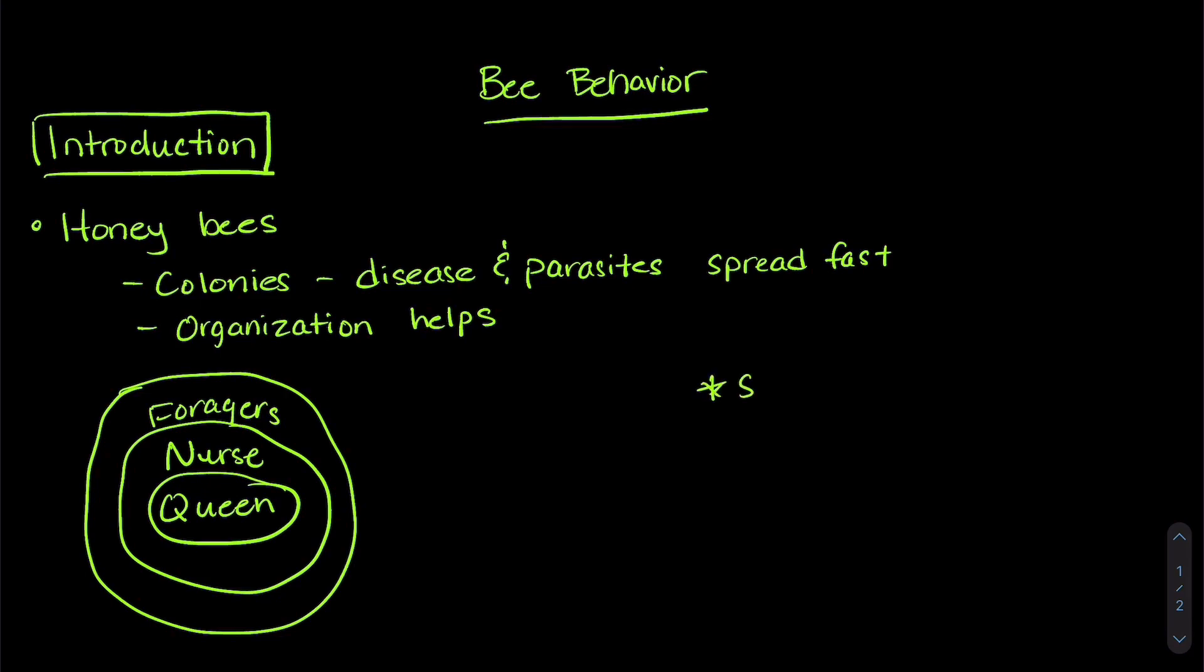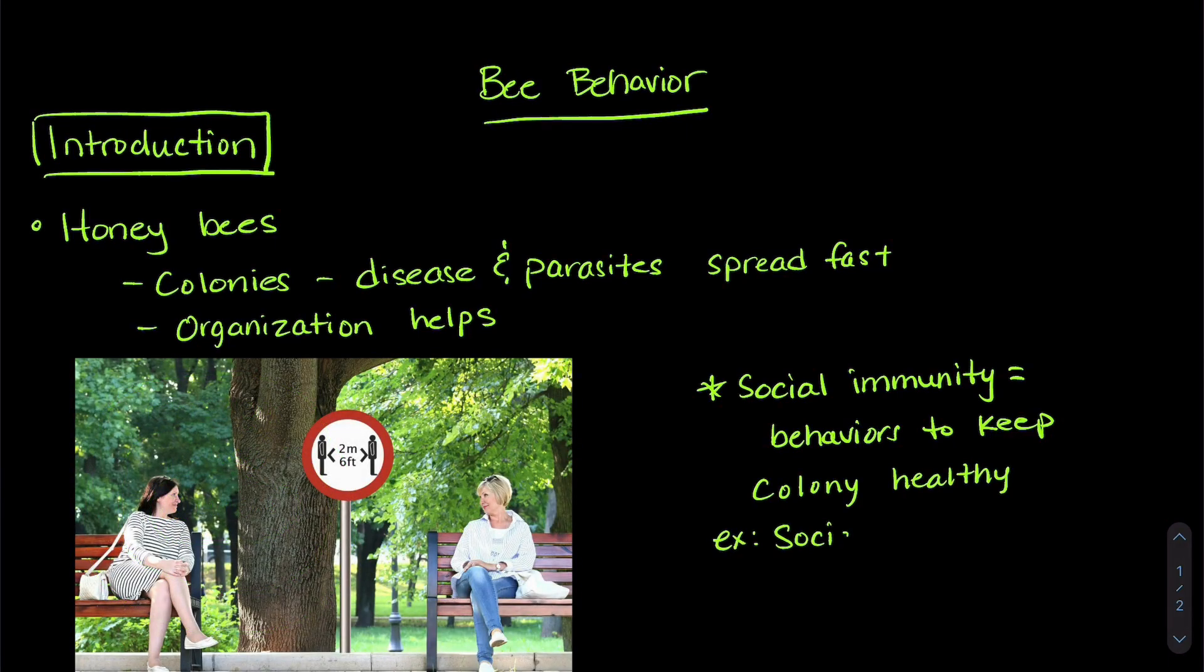Behaviors can also help. The colony can improve their defenses through something called social immunity. These are a collection of behaviors in social groups that can help decrease the susceptibility to disease or parasites. One example of social immunity is social distancing, which I'm sure you're familiar with because of the COVID-19 pandemic.